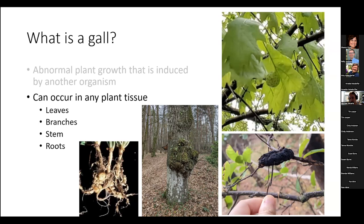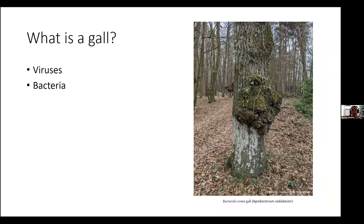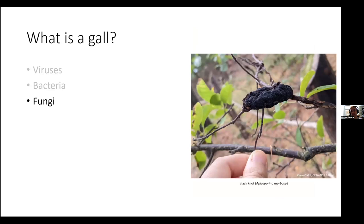Because of this broad definition, galls can be induced by lots of different organisms, things like viruses and bacteria. If you've ever been out in the woods and seen big growths on trees, that's bacterial crown gall caused by bacteria. If you were to cut that open, there's no insect in there — it's just full of bacteria that form these growths on trees and many other plants. Galls can also be formed by fungi. Black knot is a common fungal gall on cherries here in the eastern U.S. If you go look at any black cherry, you are more than likely to find black knot. It's really common.